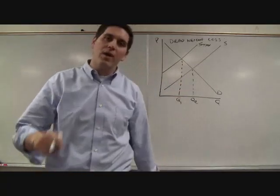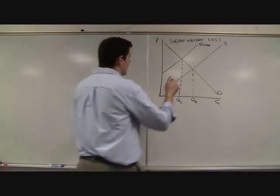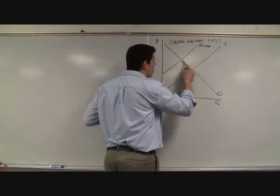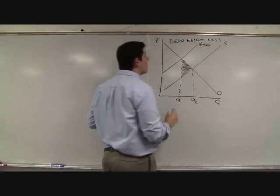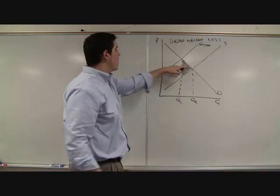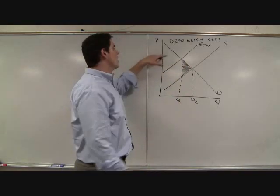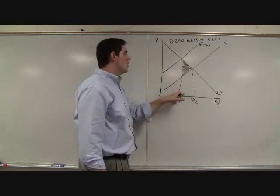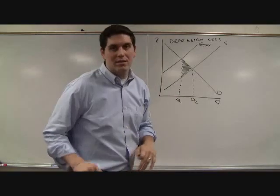And so now we're producing this quantity, Q1. Well, what do we got? Guess what? We have deadweight loss. There it is again. Consumer surplus would normally exist if we were producing at Q1 and charging this price here, but we're not. We're now charging a higher price, producing a lower quantity. Again, deadweight loss. That's the concept.